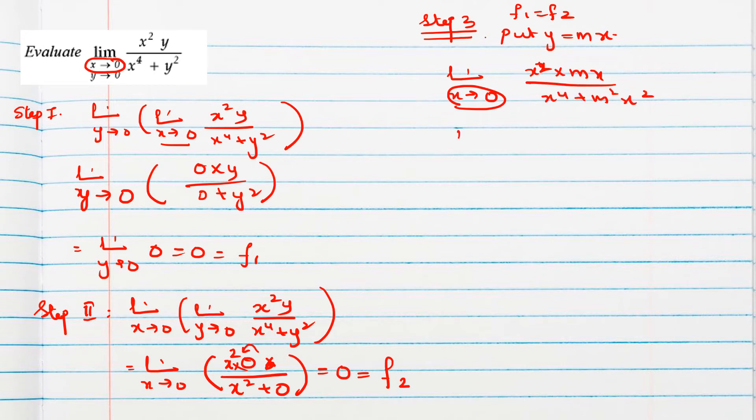So simplify it first. x is x cube, we can say mx cube, and here from denominator x square we can take common. So we can cancel, final answer is mx divided by x square plus m square. Now we will substitute x value 0, so 0 times m divided by 0 plus m square, final answer is 0. So f3.